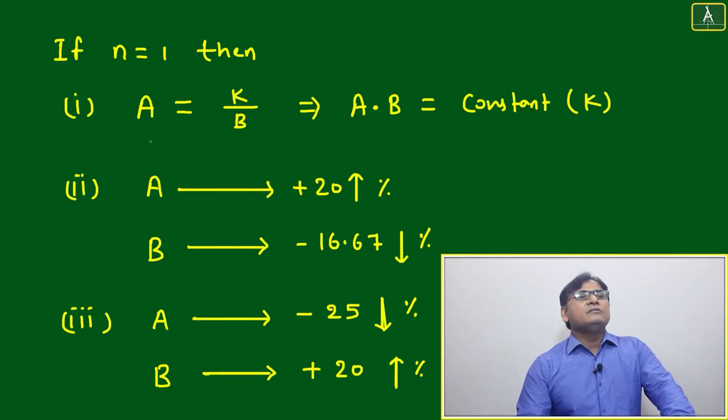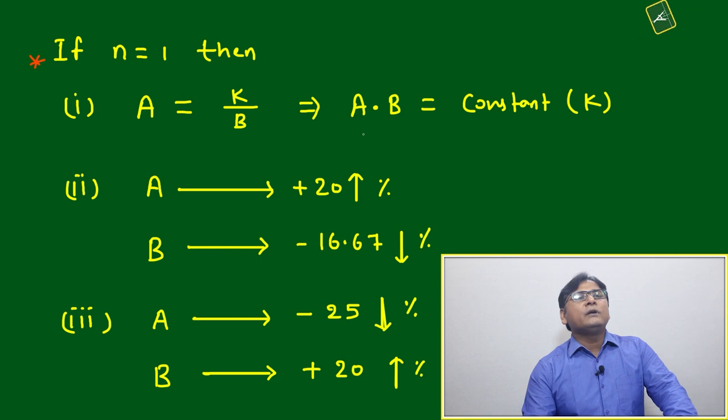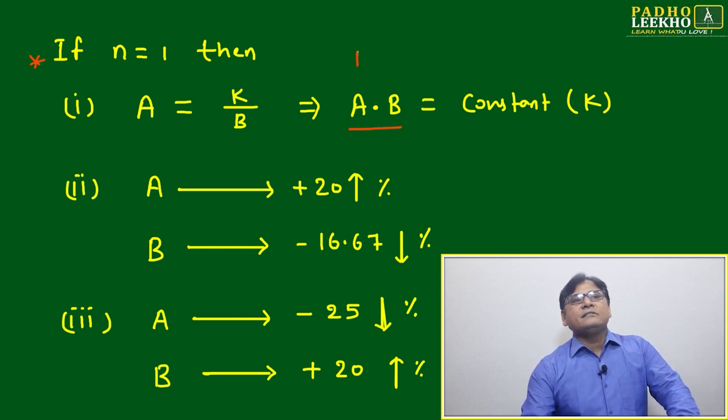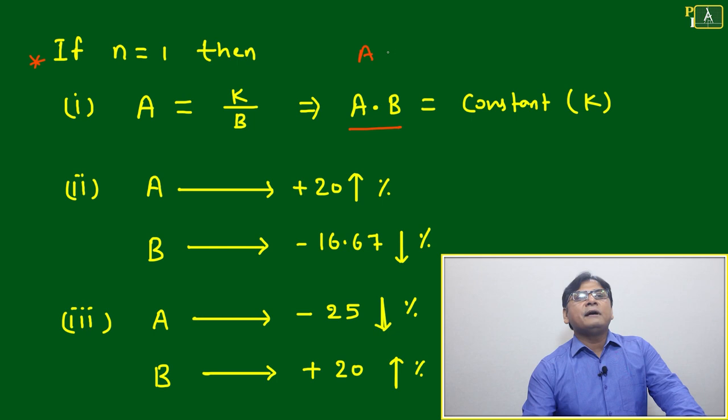Now this is a special case: if n equal to one, then A will be equal to k by B, A into B equal to constant. Another good point is for inverse proportionality it will just come as a product of two quantities. In direct proportionality we have seen A by B is constant, means division is constant. Here product will be constant.